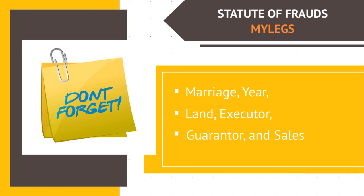The purpose is to prevent fraud and other injury. The most common types of contracts to which the statute applies are contracts that involve the sale or transfer of land, and contracts that cannot be completed within one year. Different states have different statutes of frauds, but these statutes typically cover six categories. The categories can be remembered by using the mnemonic MY LEGS, which stands for marriage, year, land, executor, guarantor, and sales.